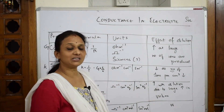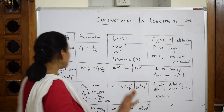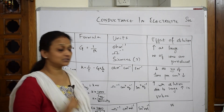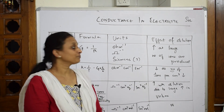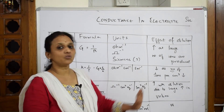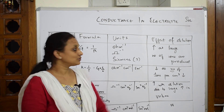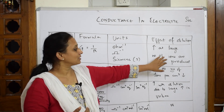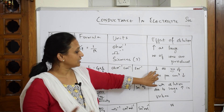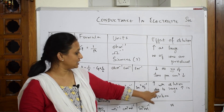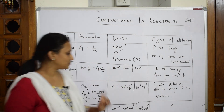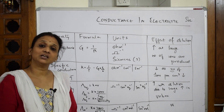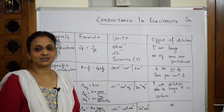The key takeaway: the only property that decreases with dilution is specific conductance. All the remaining properties — conductance, equivalent conductivity, and molar conductivity — will increase with dilution. When asked in the exam, write whether it increases or decreases and give the reason. This tableau column is very important for electrolytic conductance.